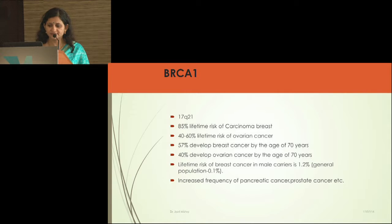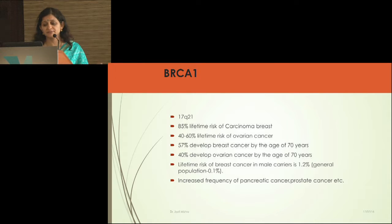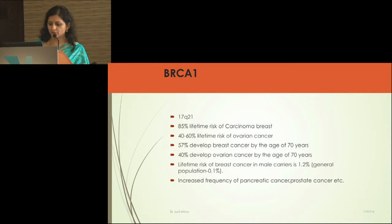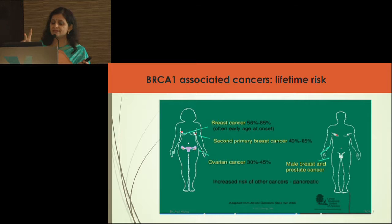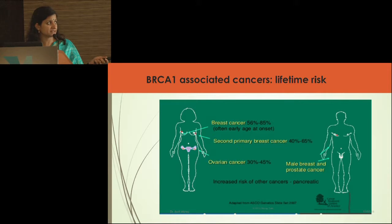Let's talk of BRCA1. The chromosome affected is chromosome 17, long arm. Women who are BRCA1 positive have an 85% lifetime risk of developing breast cancer, 40–60% lifetime risk of ovarian cancer, 57% risk of breast cancer before age 70, and 40% risk of ovarian cancer before age 70. Males also have a risk of developing breast cancer and an increased risk of pancreatic and prostatic cancer. BRCA1-positive women are prone to primary cancers in both breasts — not secondary, but independent primaries in each breast.